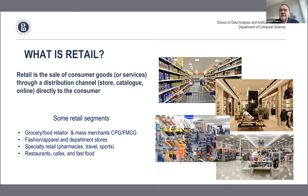We can distinguish several retail segments. One very big segment is grocery and food retail, which also includes what's called CPG or FMCG — CPG stands for Consumer Packaged Goods and FMCG is Fast Moving Consumer Goods. Then there is fashion, apparel, department stores, specialty retail like pharmacies, travel stores, hardware stores, and restaurants, cafes, and fast food.